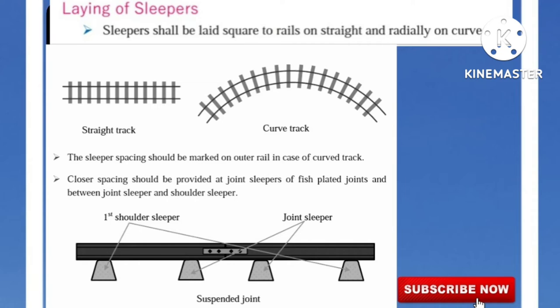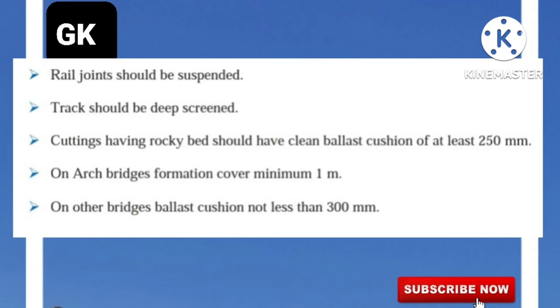Laying of Sleepers: Sleepers shall be laid square to rails on the straight and radially on curved lines. Sleeper spacing should be marked on the outer rail in case of curved track. Closer spacing should be provided at joint sleepers of fish-plated joints and between joint sleepers and shoulder sleepers. Rail joints should be suspended and track should be deep screened. Cuttings having rocky base should have a clean ballast cushion of at least 250 mm. On arch bridges, formation cover minimum 1 meter. On other bridges, ballast cushion not less than 300 mm.